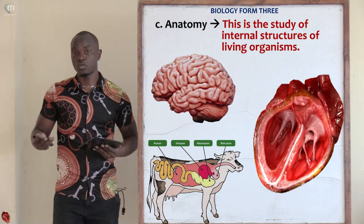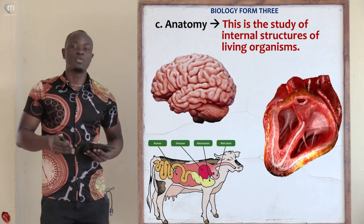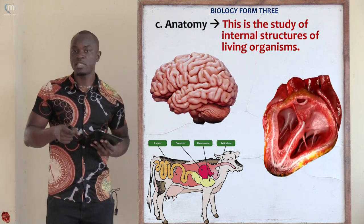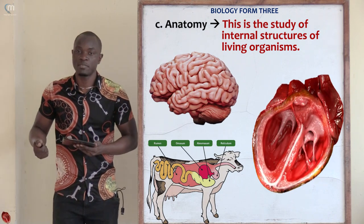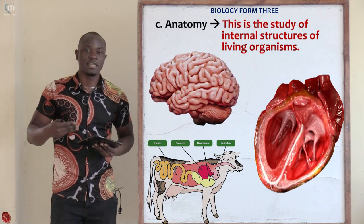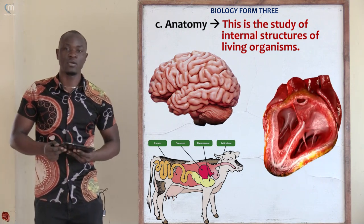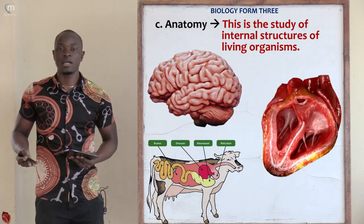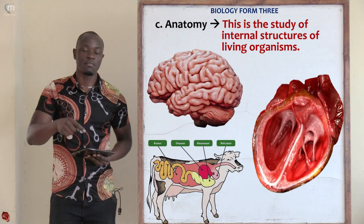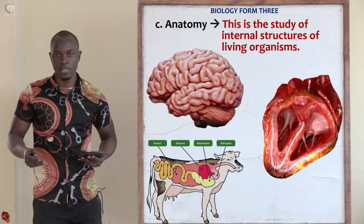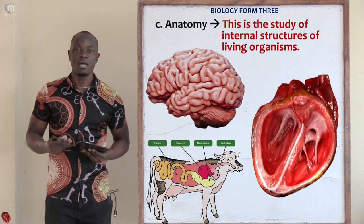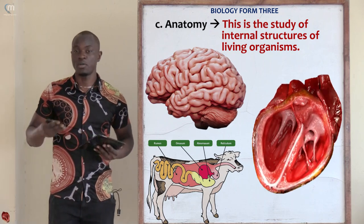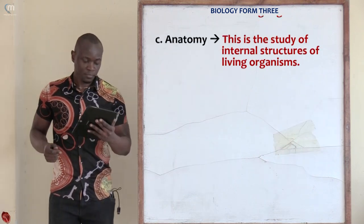We can also look at anatomy. Anatomy is the opposite of morphology. Morphology is the study of external structures, while anatomy is the study of internal structures of living organisms. For example, if you study the heart, the brain, the blood vessels, or the functioning of the digestive system in humans or ruminants, that is under anatomy.